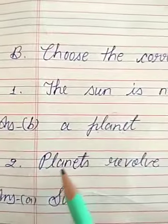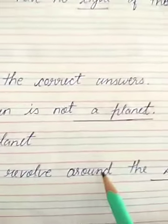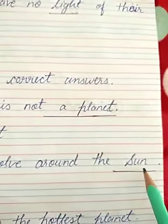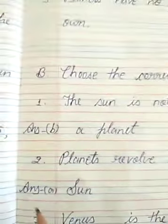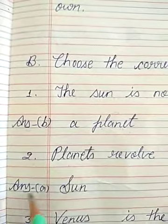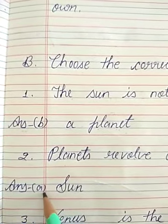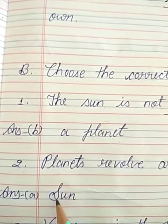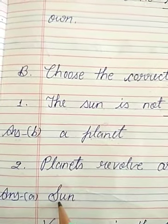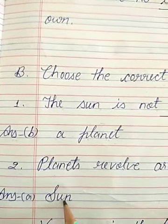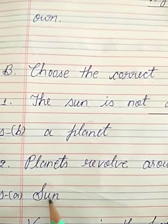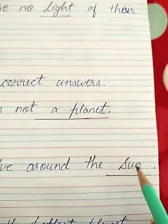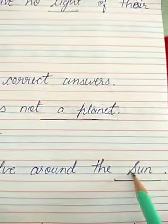Number 2. Planets revolve around the dash. The answer is Option A — Sun. Planets revolve around the Sun. S-U-N, Sun. Write Sun here also.